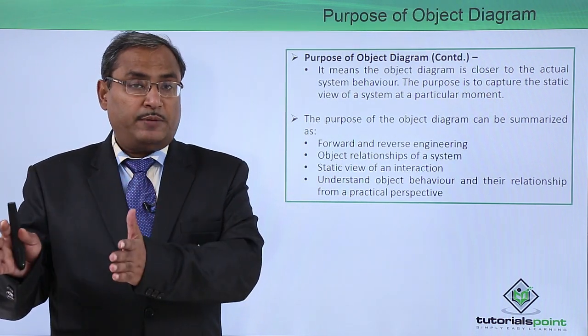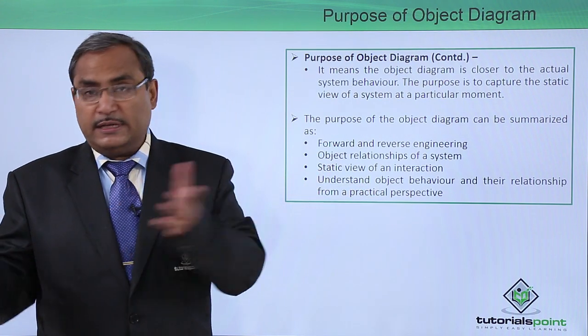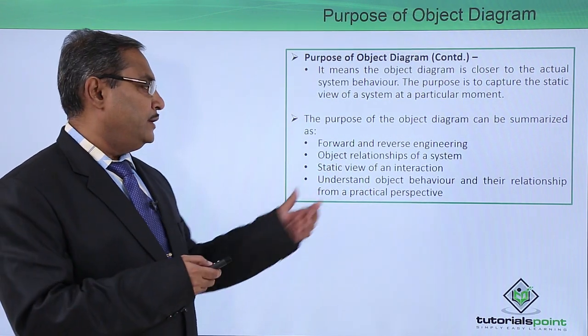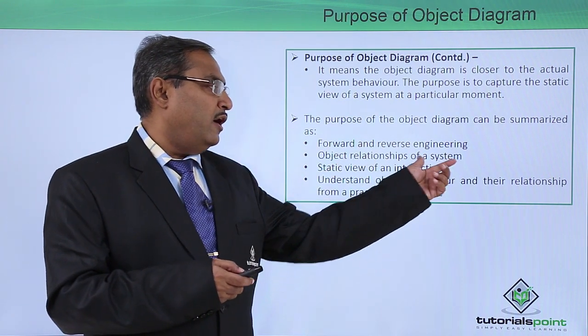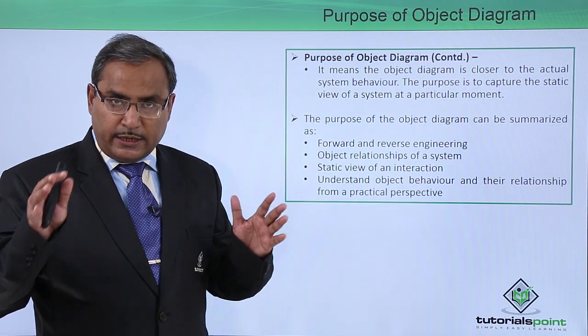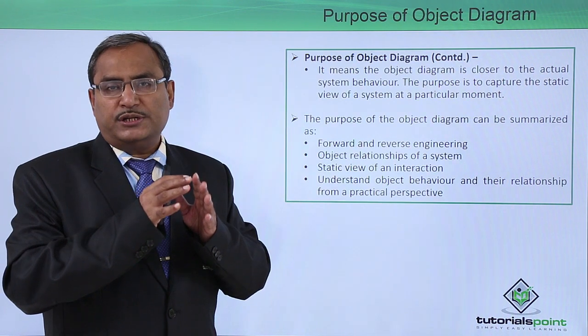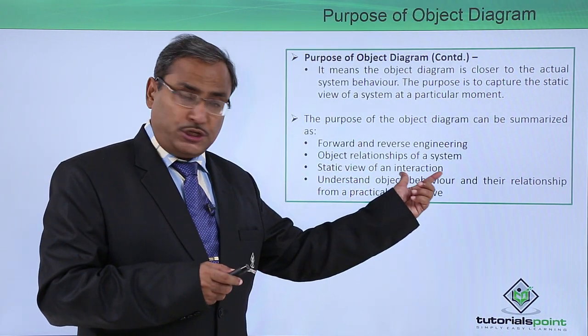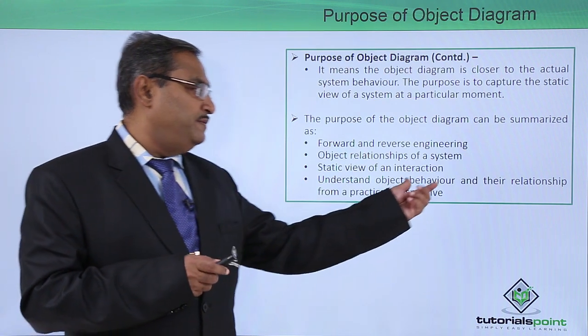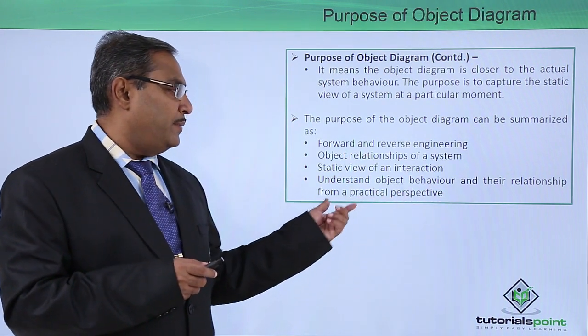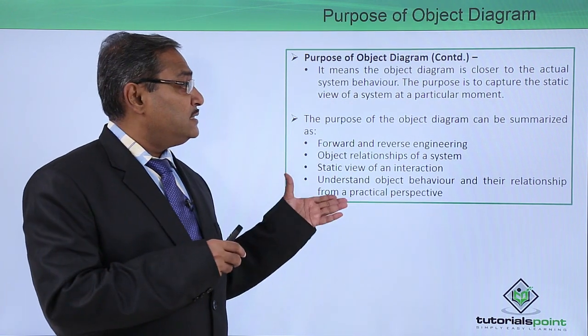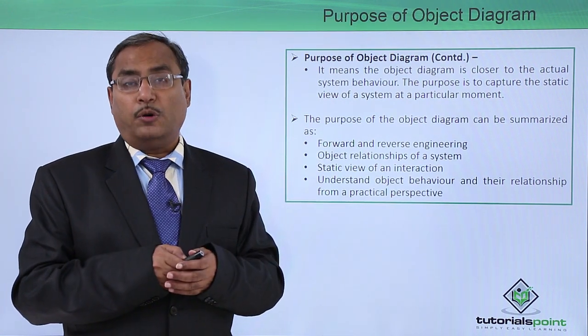From the model to application development is forward engineering, and if you come in the reverse order that is reverse engineering. Object relationships of a system - how the objects are getting related, how the relationships are existing, and then static view of an interaction and understand object behavior and the relationship from a practical perspective. These are the respective purposes of our object diagram.